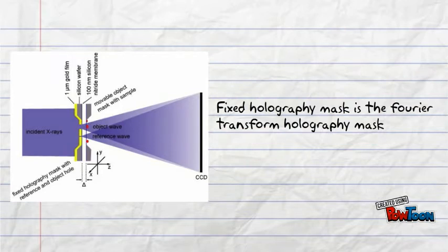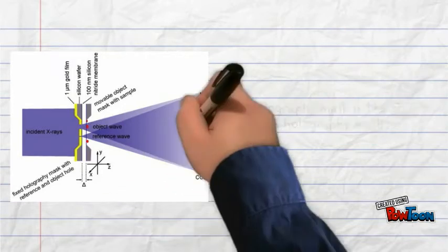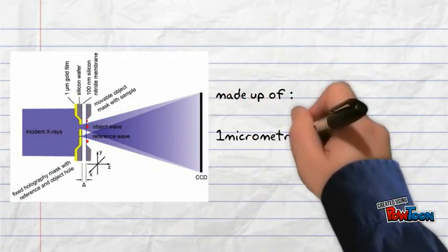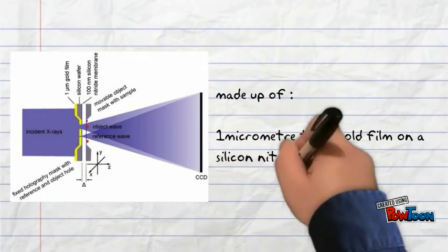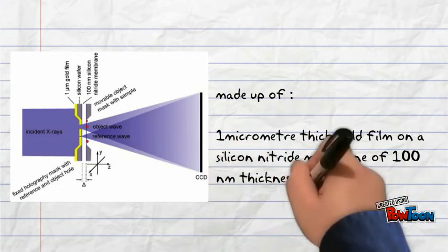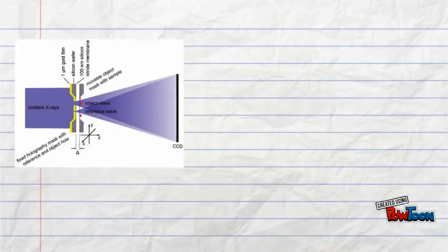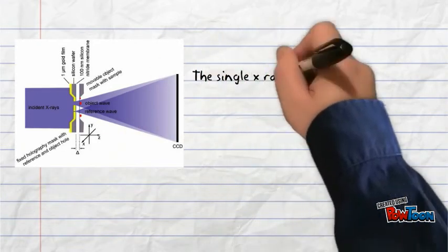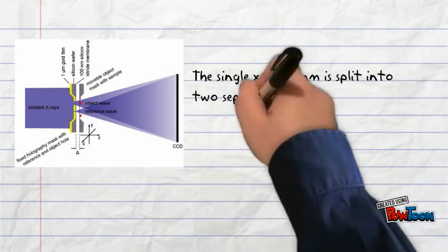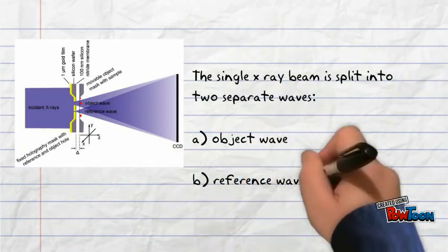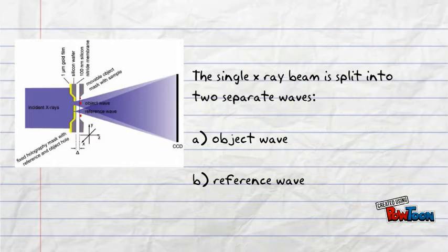The FTH mask is made up of a 1µm thick gold film on a silicon nitride membrane of 100nm in thickness. The mask basically splits the X-rays into 2 separate waves due to the presence of 2 holes being present. These 2 holes are the reference hole and the object hole.